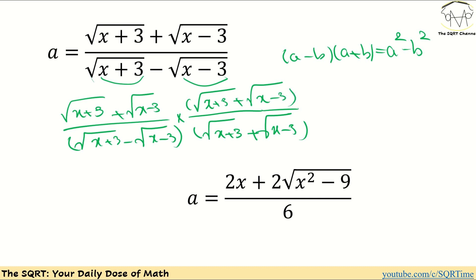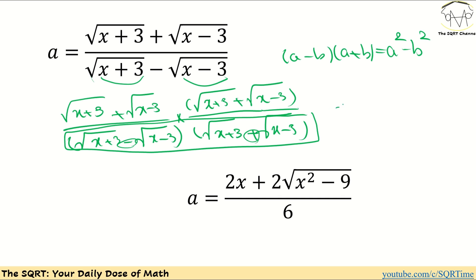This is just a fraction with value 1. For the bottom, we have a minus and a plus — everything is the same, so we use the difference-of-squares identity. It gives us (x+3) minus (x-3). Simplifying: x minus x cancels, and 3 minus negative 3 gives 6. So the denominator becomes 6.